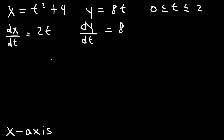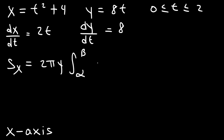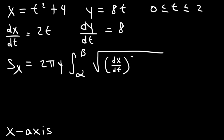Next, use this formula. To find a surface area about the x-axis, it's going to be 2π y times the integral from alpha to beta of the square root of (dx/dt)² plus (dy/dt)².